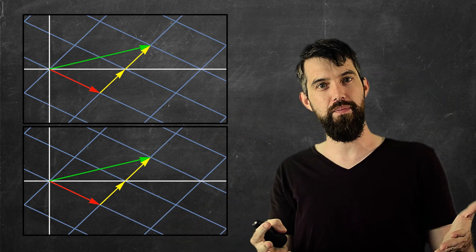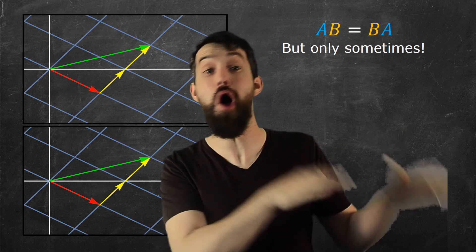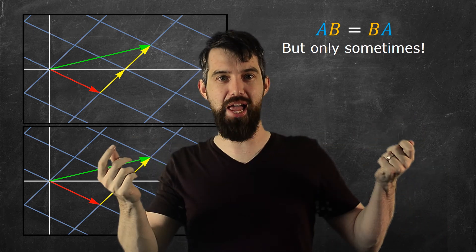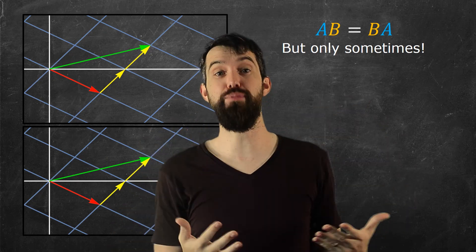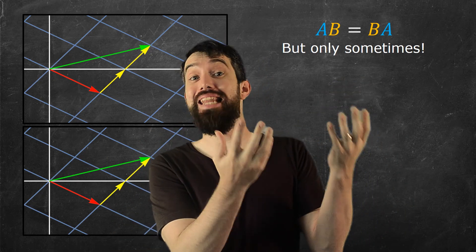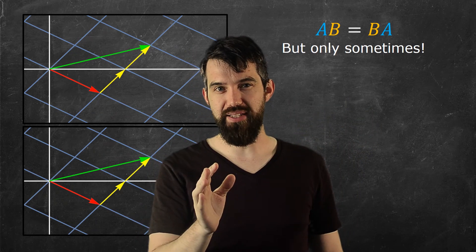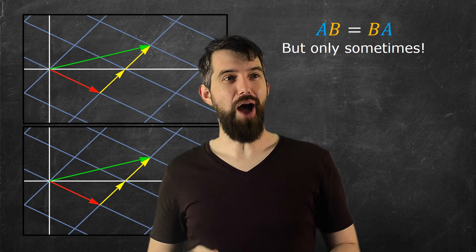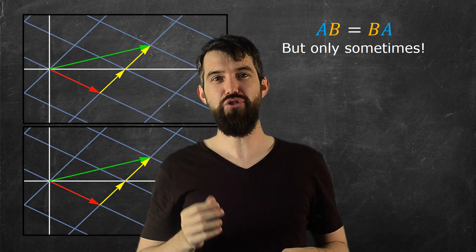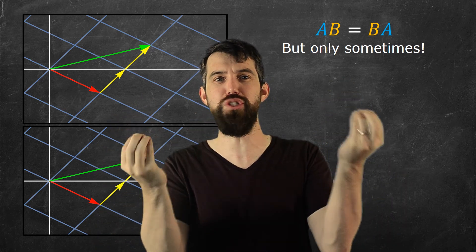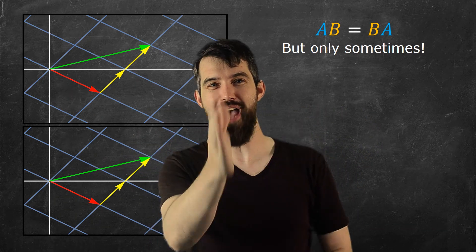Now, is this always true? It turns out it is not always true. Sometimes when you compose transformations and alternate the order you get the same result — sometimes AB equals BA as matrices. But it is not always the case. So I want to leave this as a challenge: think geometrically about transformations from R2 to R2, and try to find two different transformations where composing them one way gives a different result from composing them the other way.